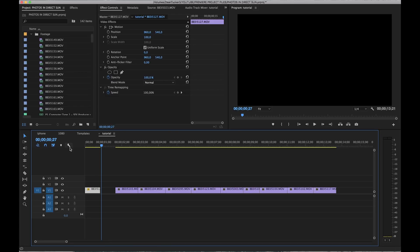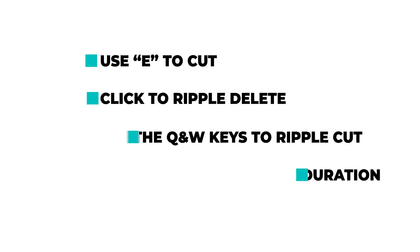Quick recap: make sure to change your keyboard shortcuts so that E is your cut key — it makes cutting so much easier. Next is the click ripple delete instead of right-clicking ripple delete. Taking that further, use the W and Q keys to ripple delete, cut back and forward. And lastly, use Command+R to open the Speed and Duration window. Those are my top tips for editing video faster. If you have your own tips from editing in Premiere Pro, please leave them in the comments below so everyone can learn together. If you enjoyed the video, leave a like, and if you're new here, hit subscribe for new tutorials every Wednesday and cinematic films every Saturday. Stay weird, don't die, and make it happen — see you in the next one.